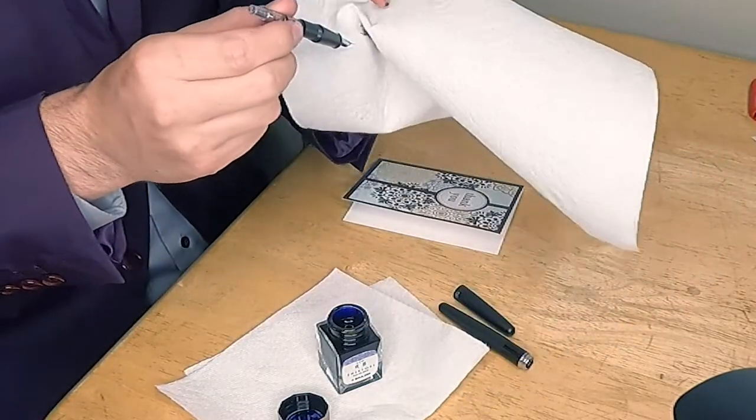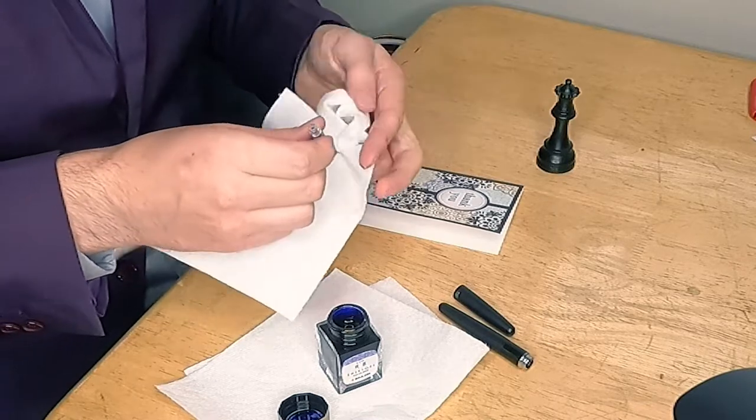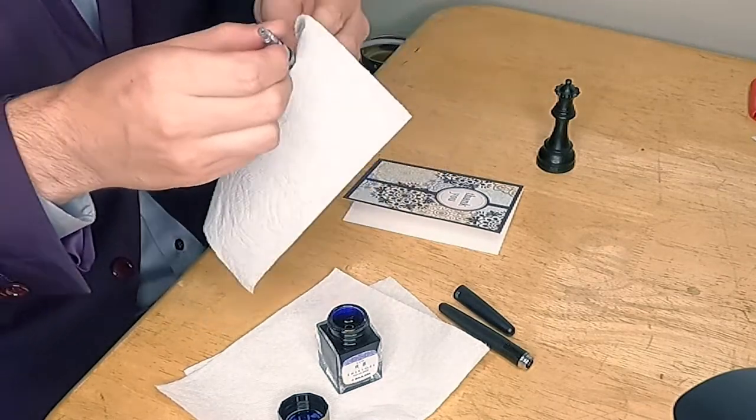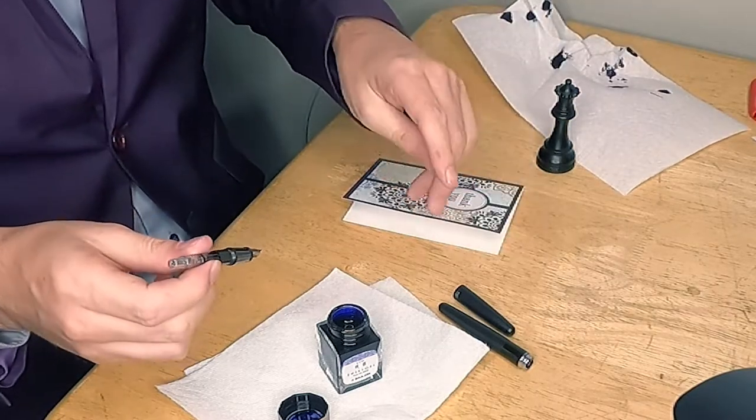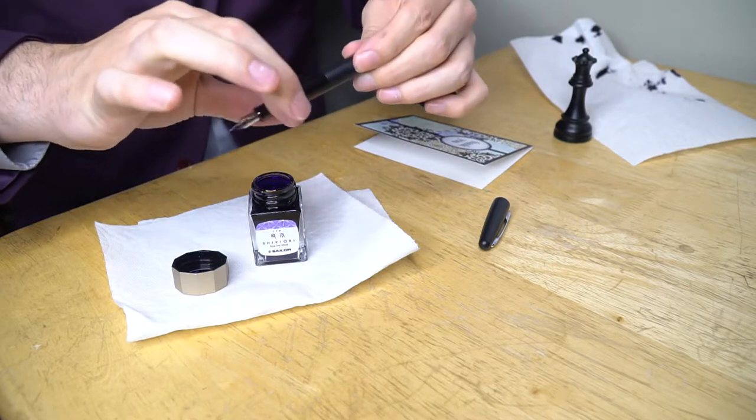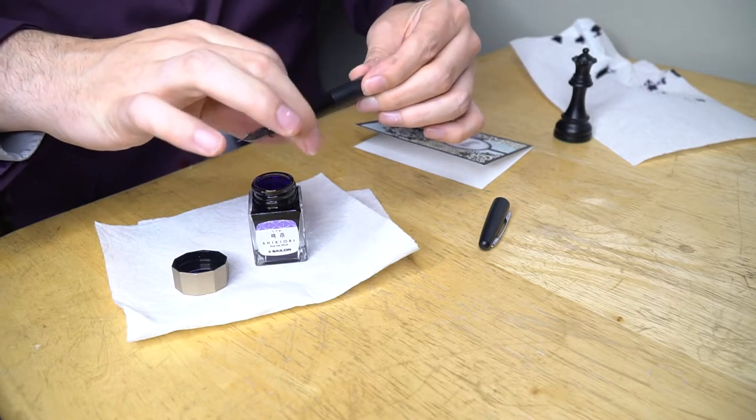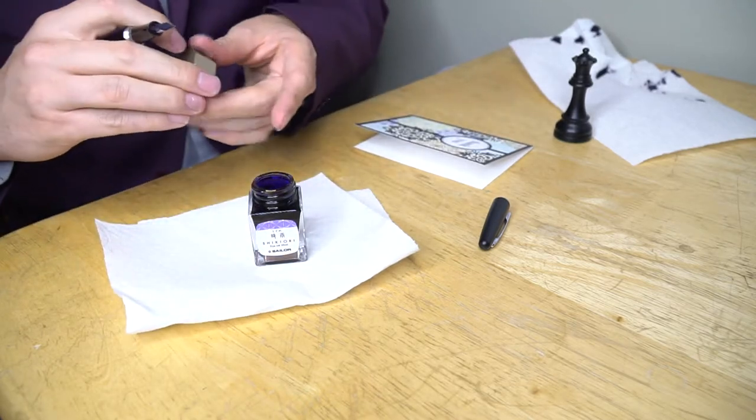Now use that paper towel to clean off the excess. The ink gets on your hands, it comes with the territory, and washing your hands typically will clear it up. Now let's reassemble the pen. Close up my ink to make sure I don't make an even bigger mess.